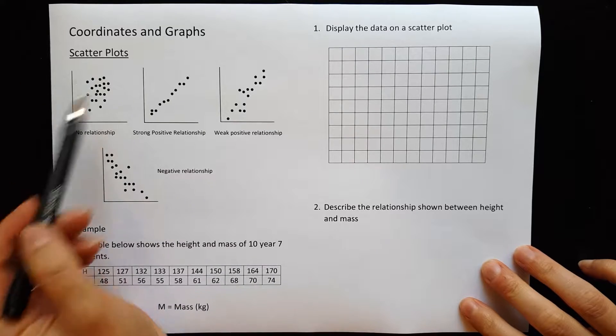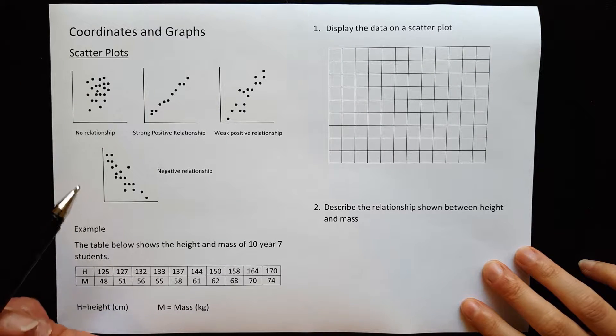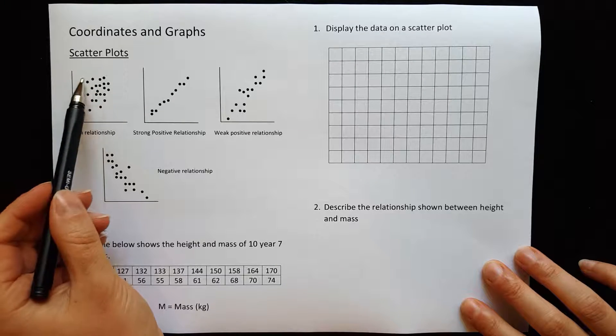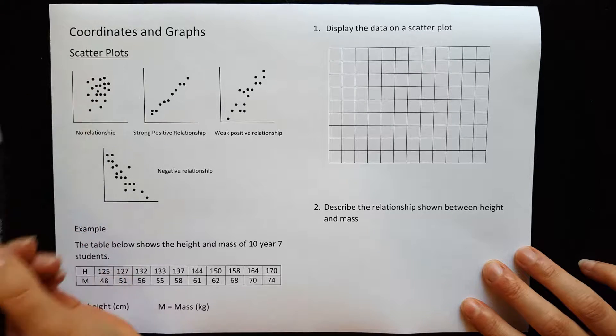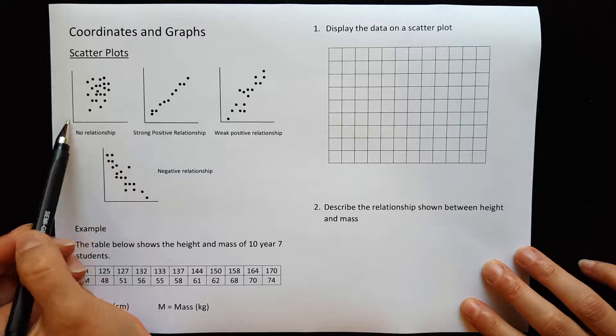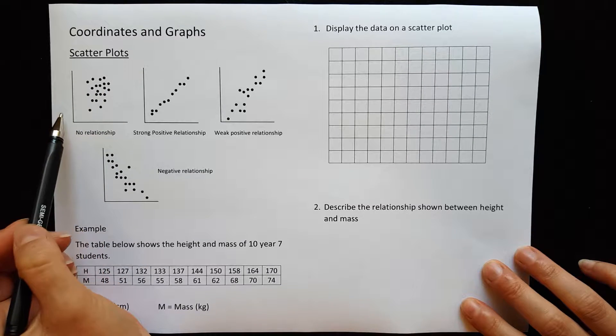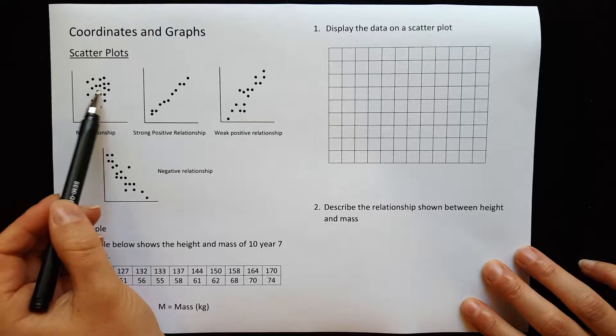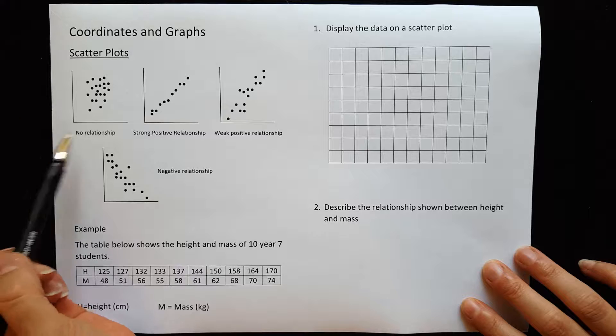Often when we're plotting points on our Cartesian plane we get things that are in straight lines, but sometimes they're not. Sometimes they're just a big clump of results and there's nothing that we can see that relates the two variables together. We say when that happens that there is no relationship between the two variables. They're just all over the place, dots everywhere, no relationship.